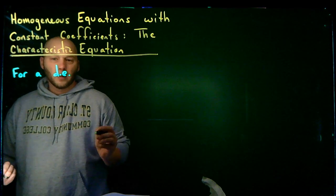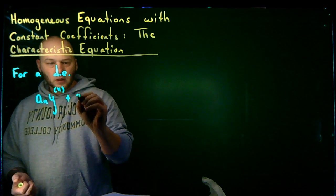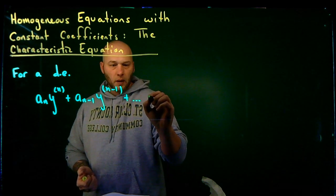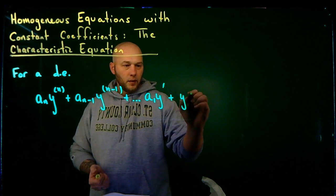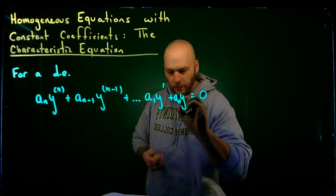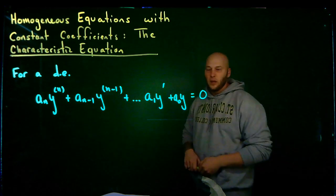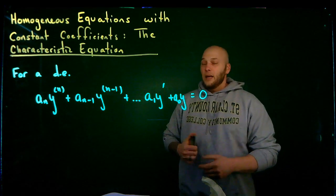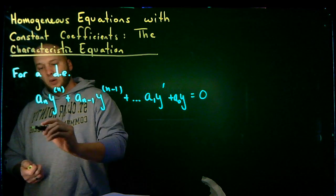For a differential equation of the following form: I've got a_n times the nth derivative of the unknown function, plus a_{n-1} times the (n-1)th derivative, plus dot dot dot, plus a_1 y prime, plus a_0 y, is equal to zero. The coefficients are fixed real numbers, so this is a linear constant-coefficient homogeneous differential equation.